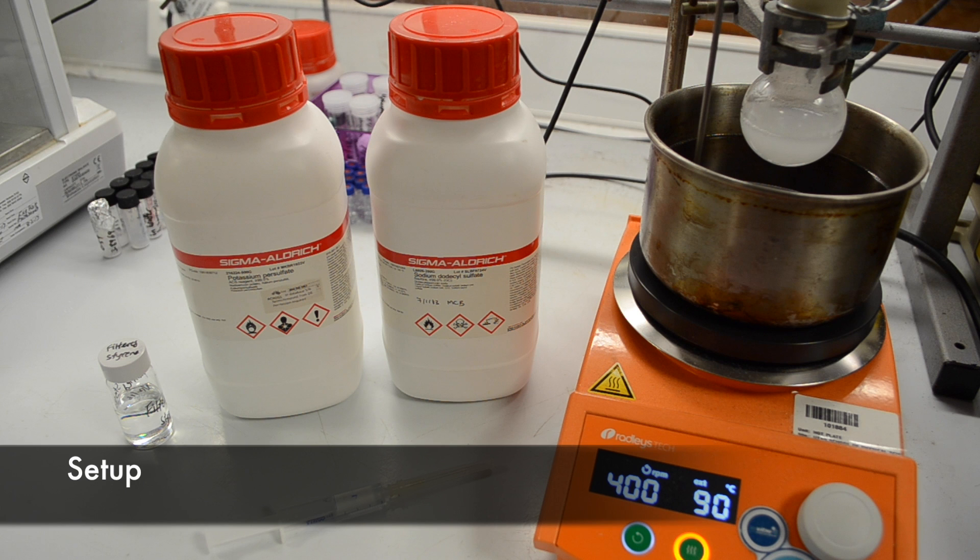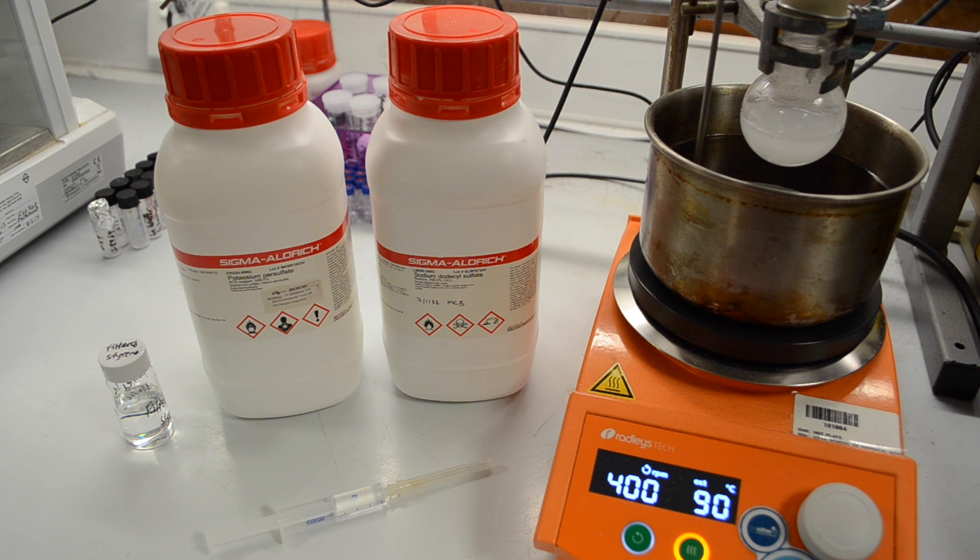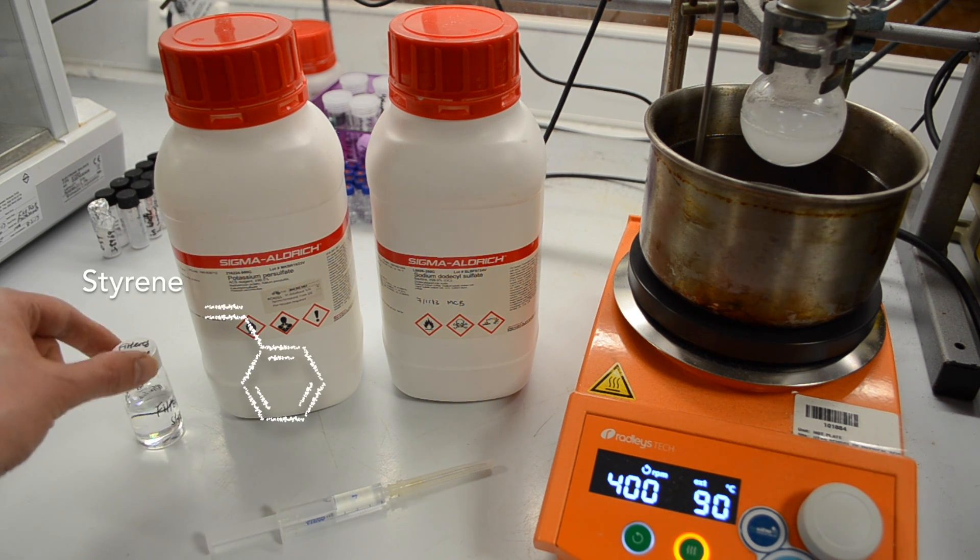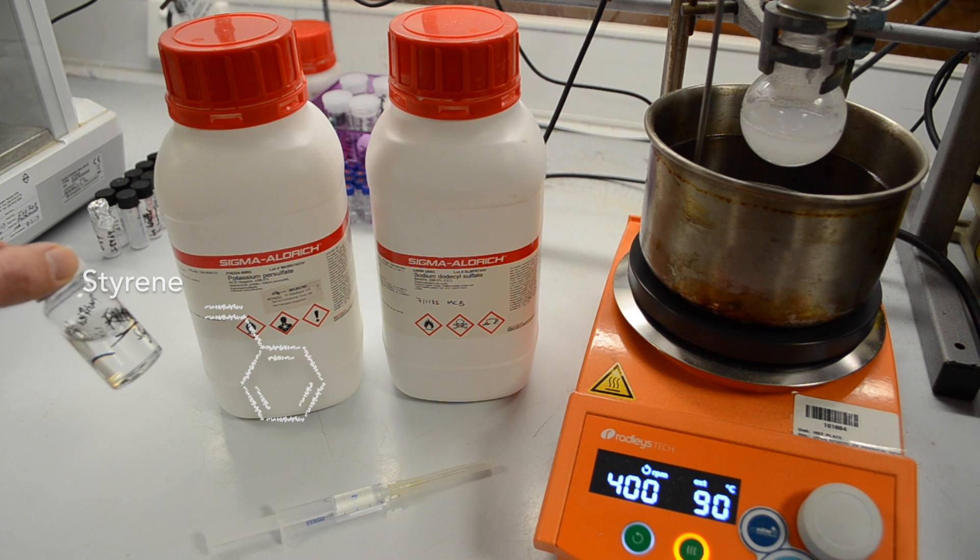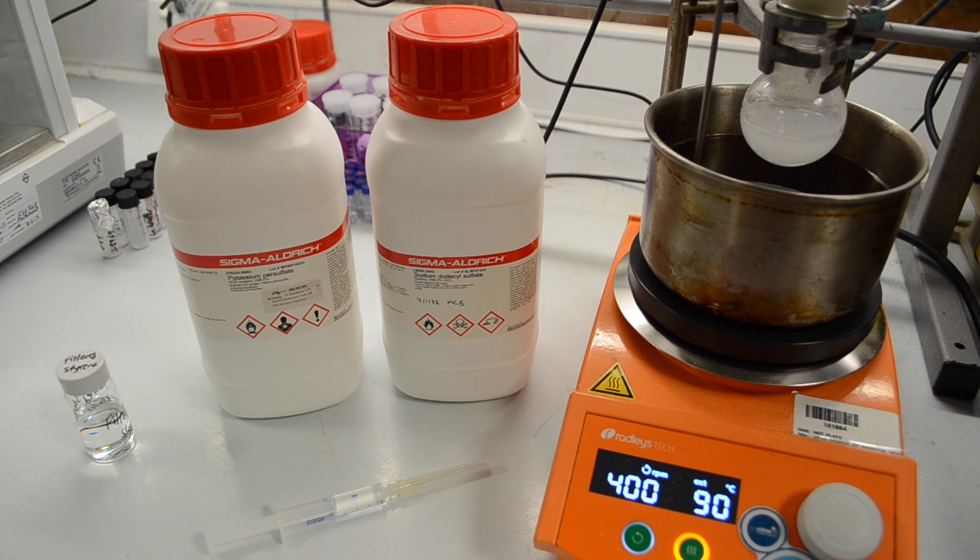So we're about to begin our emulsion polymerization reaction now, and I'd like to point out a few of our reactants that we're going to use. Firstly, we're going to use an oil bath that's already set to 90 degrees. We're going to begin our reaction at an elevated temperature. We've got our monomer, which in this case is styrene. That's the thing that we're going to use to make our polymer.